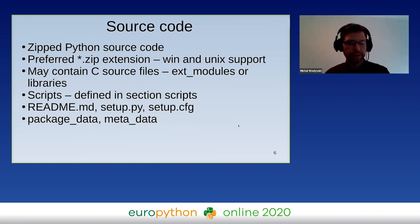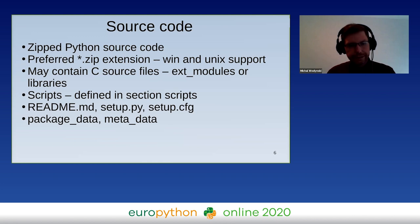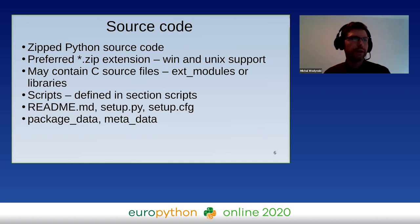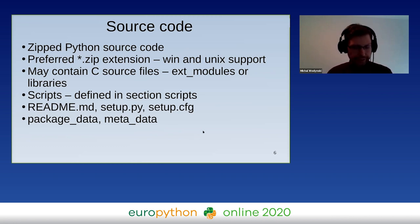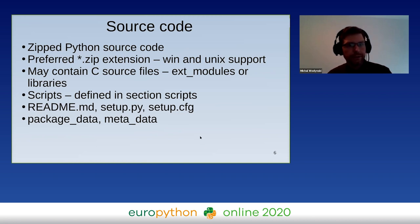We can define a README, setup.py, or setup.cfg. We can also define external package data, for example a trained model of an artificial neural network, and of course metadata to know what exactly we have installed in our system. The conclusion is that each time we want to use a source distribution — especially if we have C source files — we have to compile it, and this takes time. We would like to have an instant package ready to use.